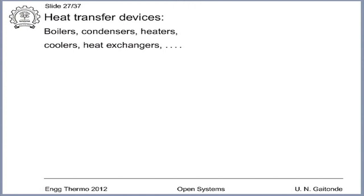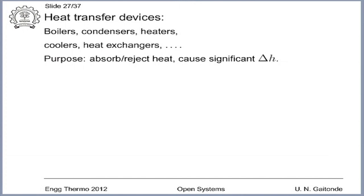First we look at heat transfer devices such as boilers, condensers, heaters, coolers, and heat exchangers. The purpose is to absorb or reject heat, and any fluid stream going through such a device will have a significant delta H, either positive or negative. For boilers and heaters, delta H is likely significantly positive; for coolers and condensers, delta H is generally significantly negative. For heat exchangers with two streams, one stream has significantly positive delta H and the other significantly negative delta H. A typical feature is no W dot S, or a negligible W dot S.